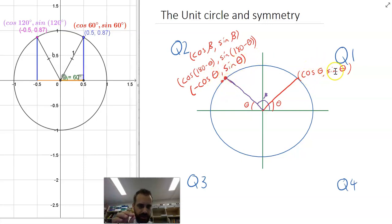Finally, we can say that that dot is equal to negative cos theta sine theta. So, we're taking Q1, we're pushing it into Q2 in this instance, 60 degrees into 120 degrees, and we're saying that they're equal. It's just that the x-coordinate is negative instead of positive.